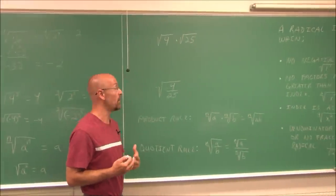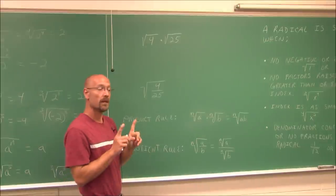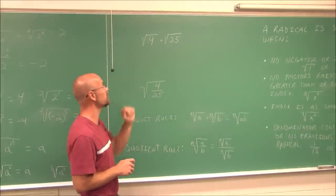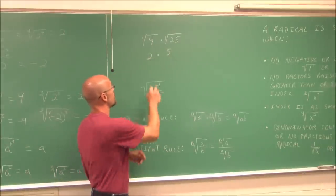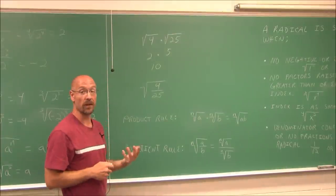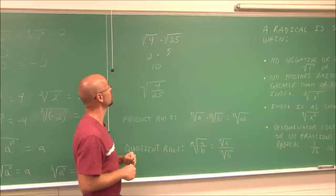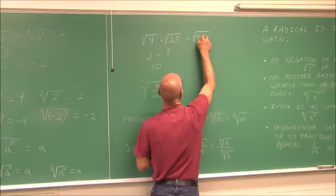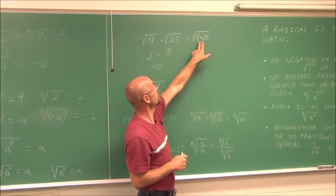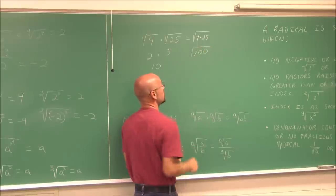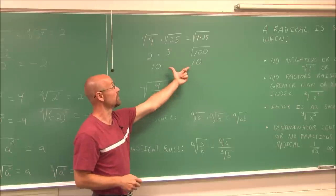Let's look at multiplication and division with radicands. Here I have the square root of 4 times the square root of 25. I can simplify each individually: the square root of 4 is 2, the square root of 25 is 5, and 2 times 5 is 10. Alternatively, if the indexes are the same — both are square roots — I can combine them under one radical: the square root of 4 times 25, which is the square root of 100. Since 100 is a perfect square, its square root is 10. Both approaches give the same answer.